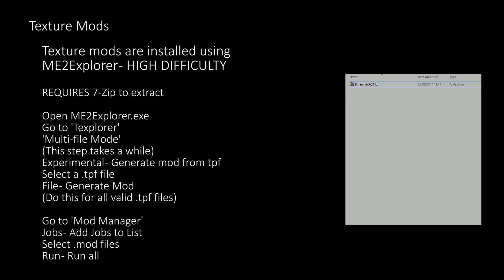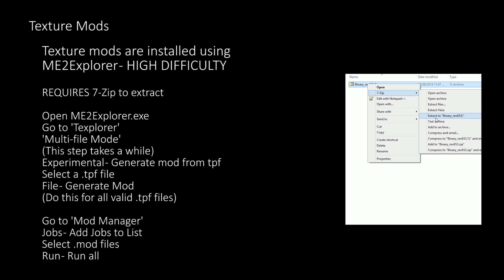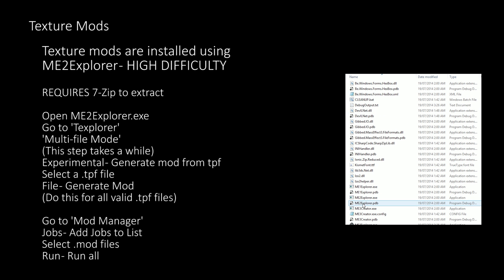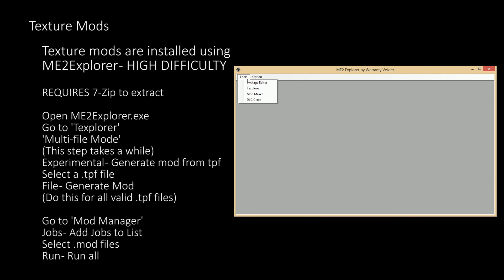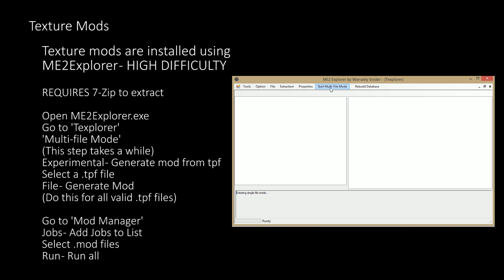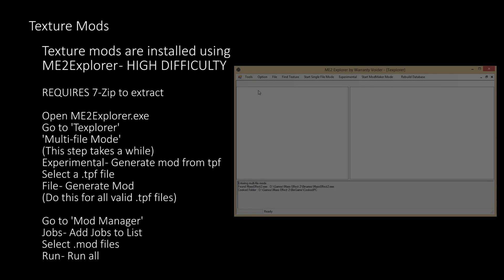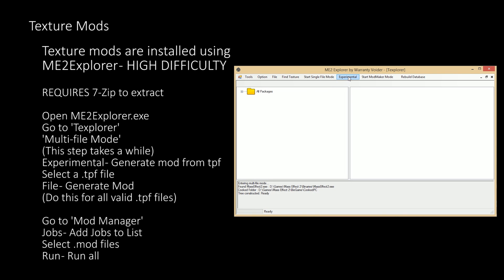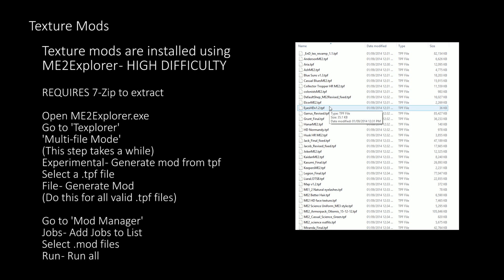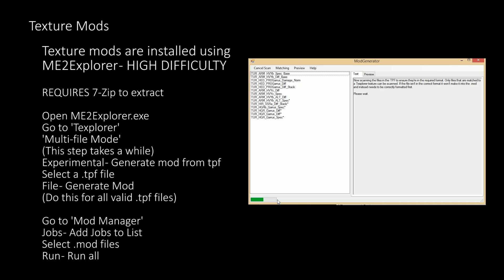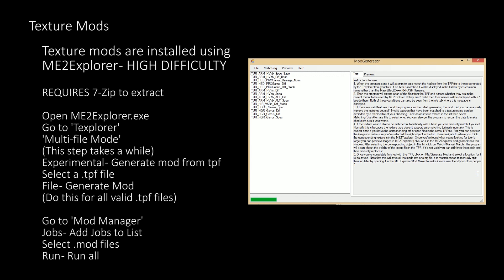For texture mods we're using ME Explorer. Bear in mind that this process is quite difficult and takes quite a lot of time. First extract ME Explorer using 7-zip, then copy your new folder to the Mass Effect 2 directory. Open ME2Explorer.exe. Once the program is loaded go to T-Explorer, and finally choose Multi-File Mode. This process can take a long time. Once it's finished go to Experimental and Generate Mod from TPF. Select one of the TPF files you will have downloaded. When the files are finally loaded, go to the File menu at the top left and choose Generate Mod.